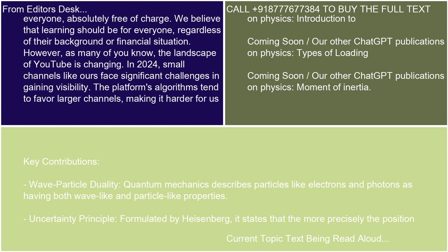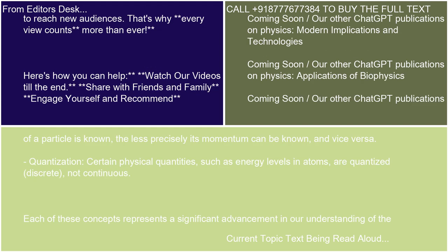Key Contributions. Wave-Particle Duality: Quantum Mechanics describes particles like electrons and photons as having both wave-like and particle-like properties. Uncertainty Principle: Formulated by Heisenberg, it states that the more precisely the position of a particle is known, the less precisely its momentum can be known, and vice versa.